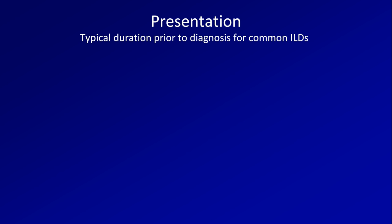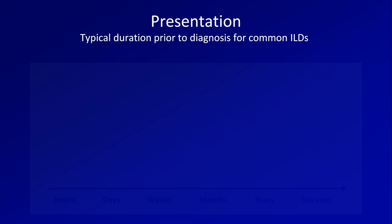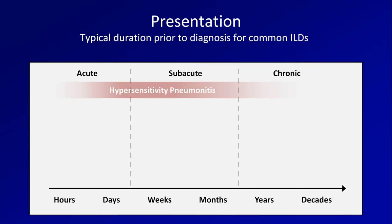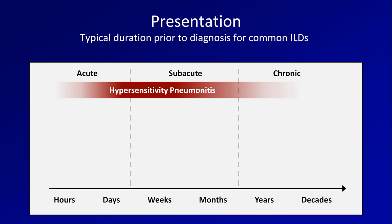Now let's talk time course — over how long do these diseases typically progress before the patient seeks medical attention and a diagnosis is hopefully made? Focusing on five of the more common diagnoses: hypersensitivity pneumonitis has an enormous range, from an acute illness developing just hours after a single heavy exposure to a chronic insidious form developing over years. ILD seen in sarcoidosis typically develops over weeks to many months. Radiation causes two clinically distinct ILDs: acute radiation pneumonitis occurs about one to three months after radiation exposure, while a chronic form — sometimes called radiation-induced pulmonary fibrosis — occurs about six to twelve months after radiation. Idiopathic pulmonary fibrosis develops over many months to several years. And the pneumoconioses typically take many years to develop and become clinically apparent.